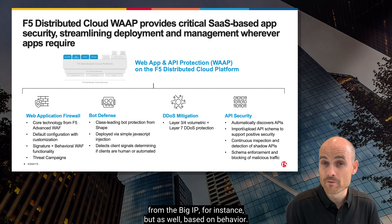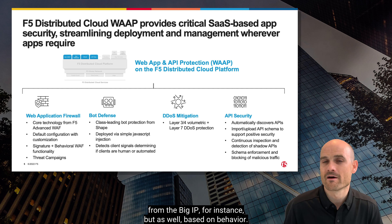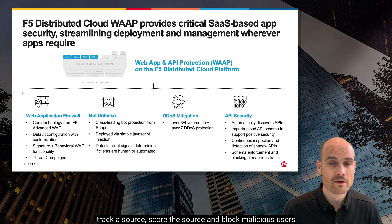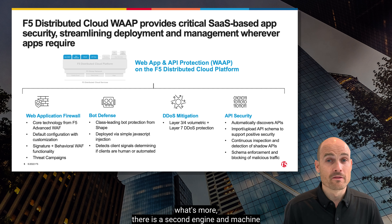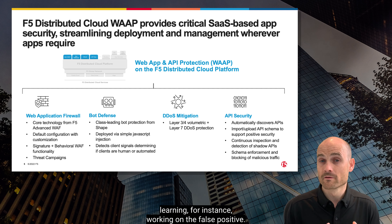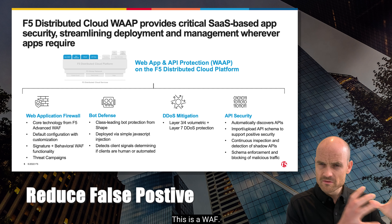There are F5 signatures that you may know from the BIG-IP, but also based on behavior. We're able to track a user, track a source, score that source, and block malicious users. What's more, there is a second machine learning engine working on false positives — we reduce false positives thanks to this new engine. This is the WAF.